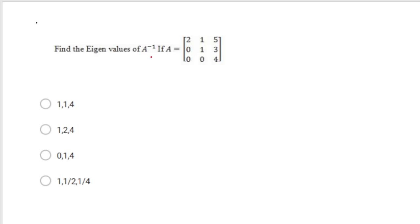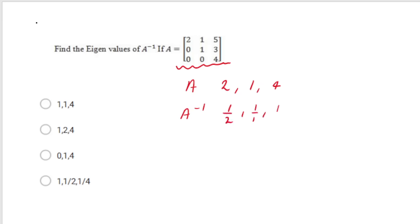Find the eigenvalues of A inverse. The matrix is upper triangular, so eigenvalues of A are 2, 1 and 4. For A inverse, each eigenvalue becomes its reciprocal: 1/2, 1/1=1, and 1/4. The correct option showing 1, 1/2 and 1/4 is the matching option.